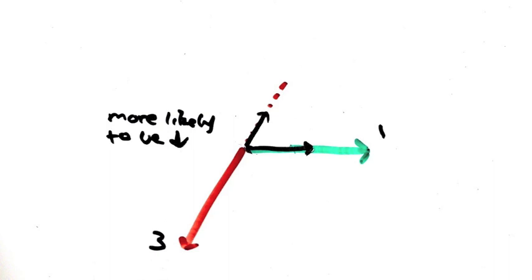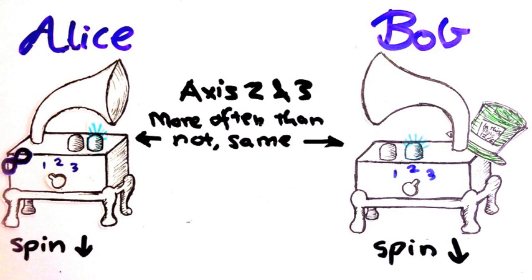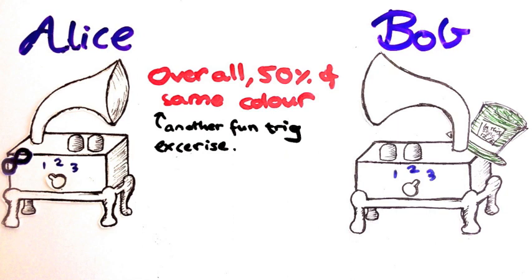Let's review those three cases again. If Bob is on axis 1, Alice and Bob definitely won't have the same colour. If Bob is on axis 2 or 3 though, more often than not, Alice and Bob will have the same colour. It works out so that overall there is an exactly 50% chance that Alice and Bob will have the same colour, and 50% chance that they won't.